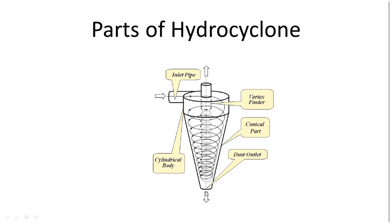This bottom point from where coarse solid particles will be discarded is called the dust outlet, underflow, or apex. Whereas this is the outer spiral movement or outer vortex moving downward, and inside there is another vortex moving upward, which is called the inner vortex.